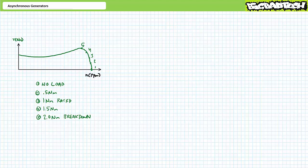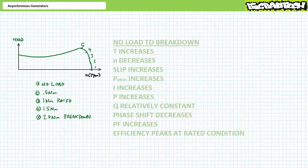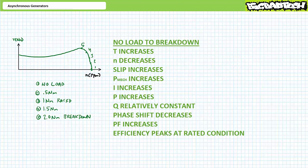We should expect some predictable results as we travel from a no-load condition through the rated condition to breakdown. As torque increases, speed will decrease, slip will increase, and mechanical power will increase. Electrically, we should expect current magnitude to increase, real electrical power input to increase, reactive power to remain relatively constant, and phase shift to decrease corresponding to increased power factor. Lastly, we should observe zero percent efficiency at no-load conditions, increasing efficiency as we load the motor, peaking at or around the rated condition, followed by decreasing efficiency as we approach breakdown.